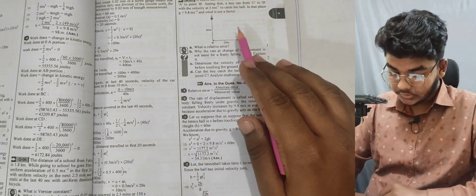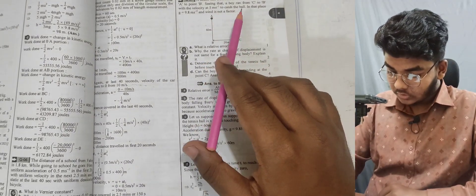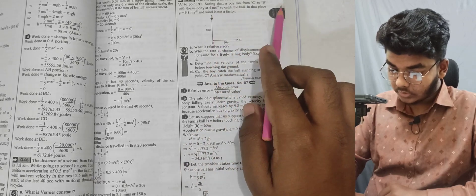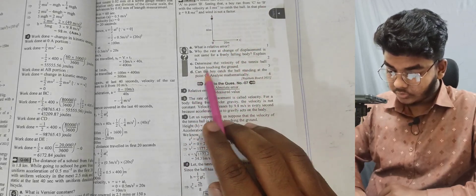A question: a tennis ball falling from rest is released from point A to point B. Determine the velocity of the tennis ball before touching the ground.